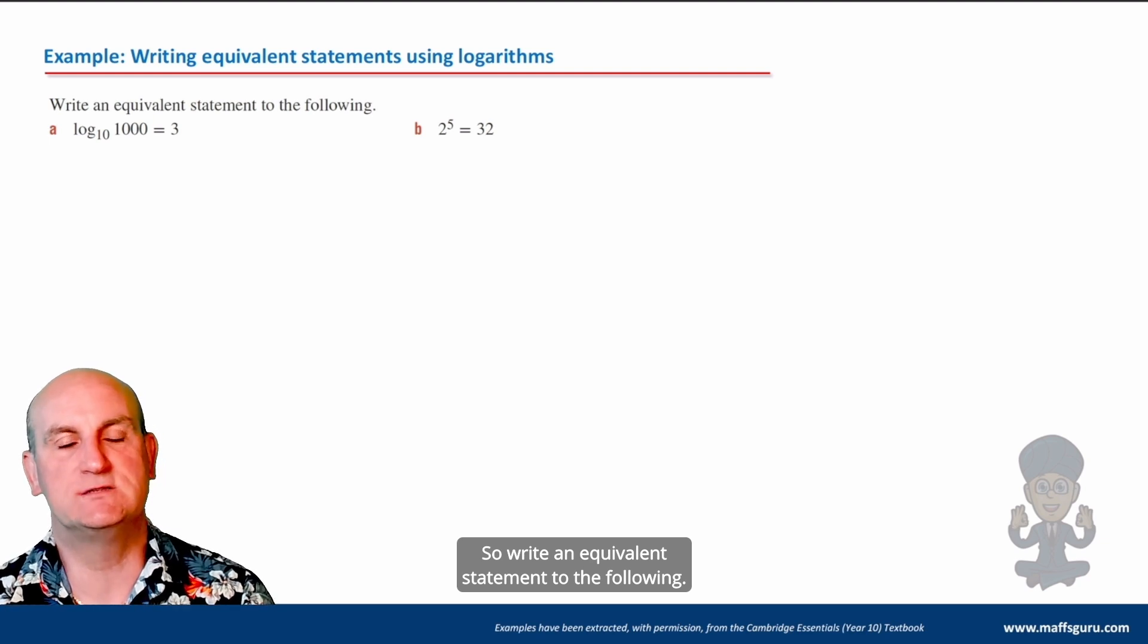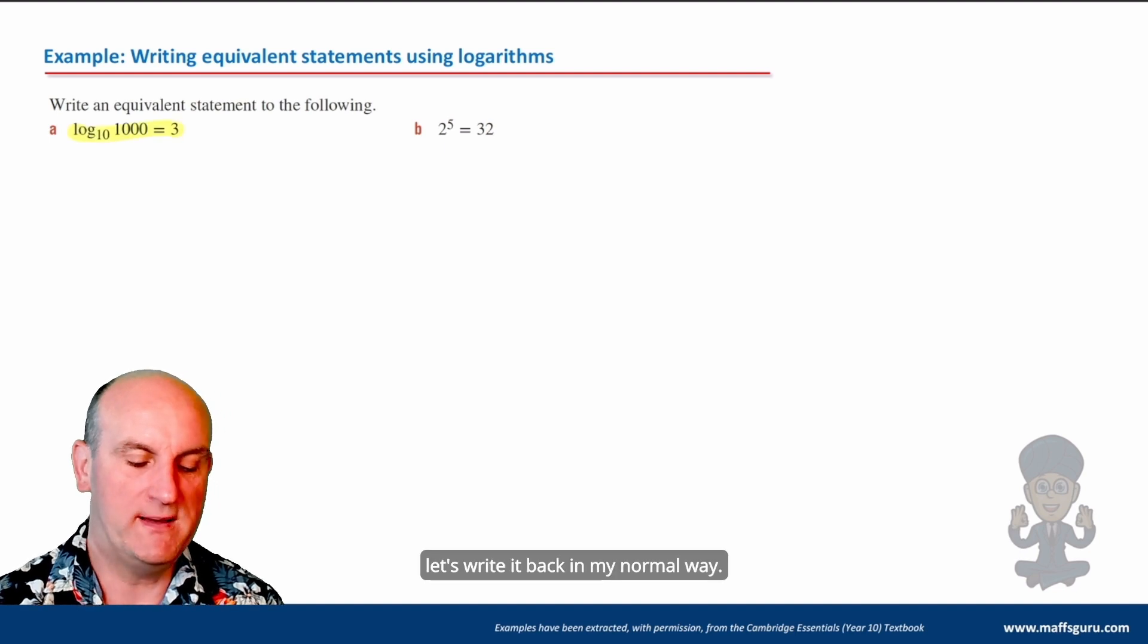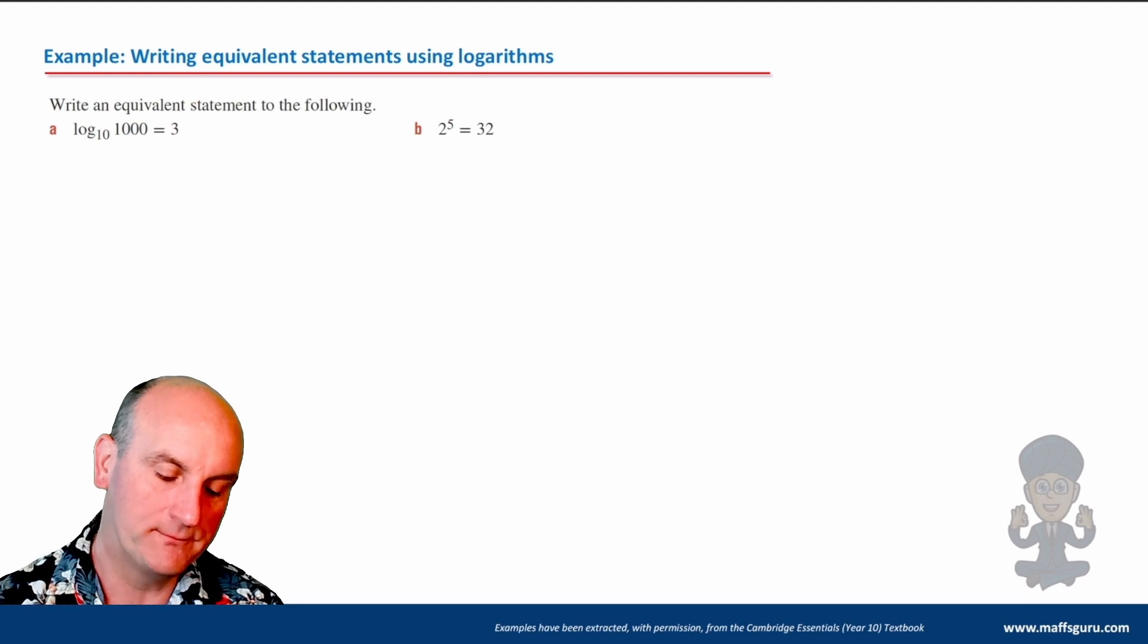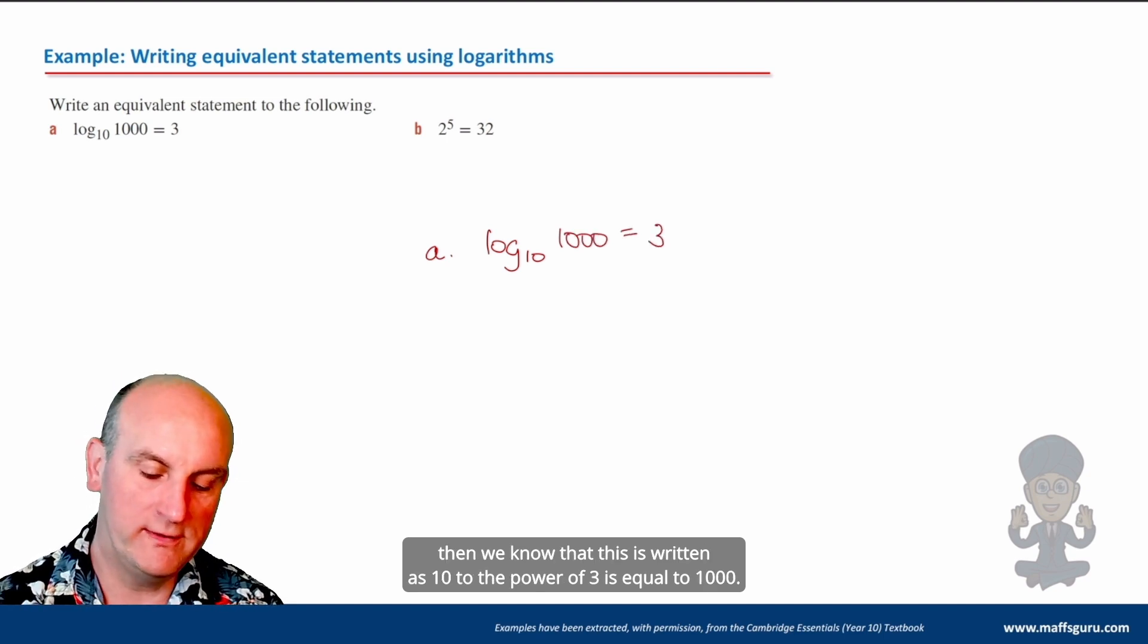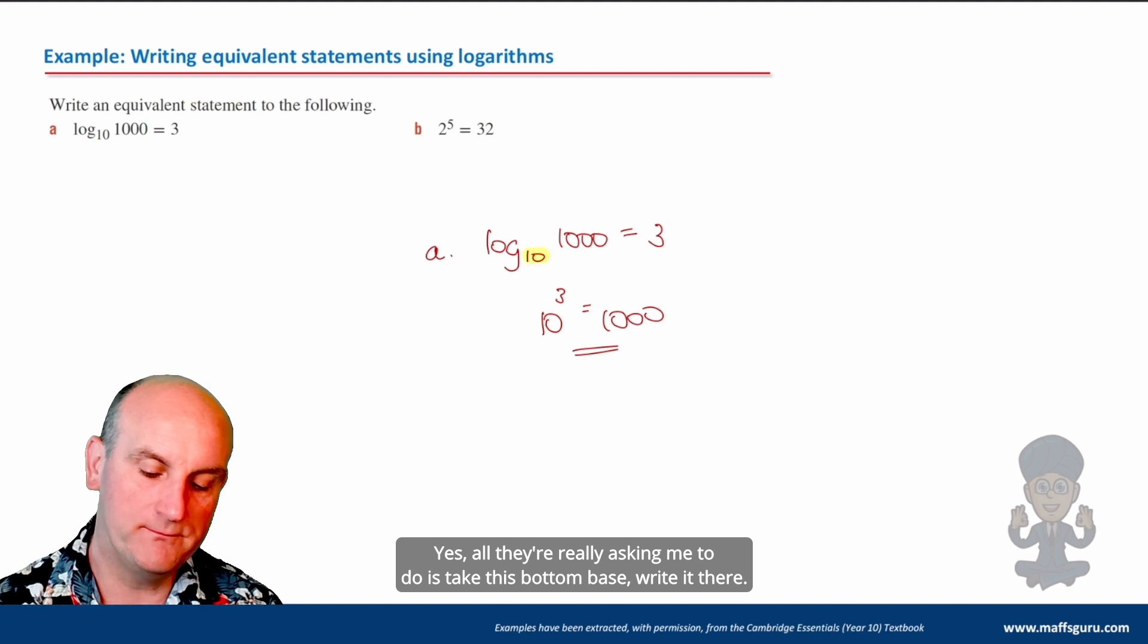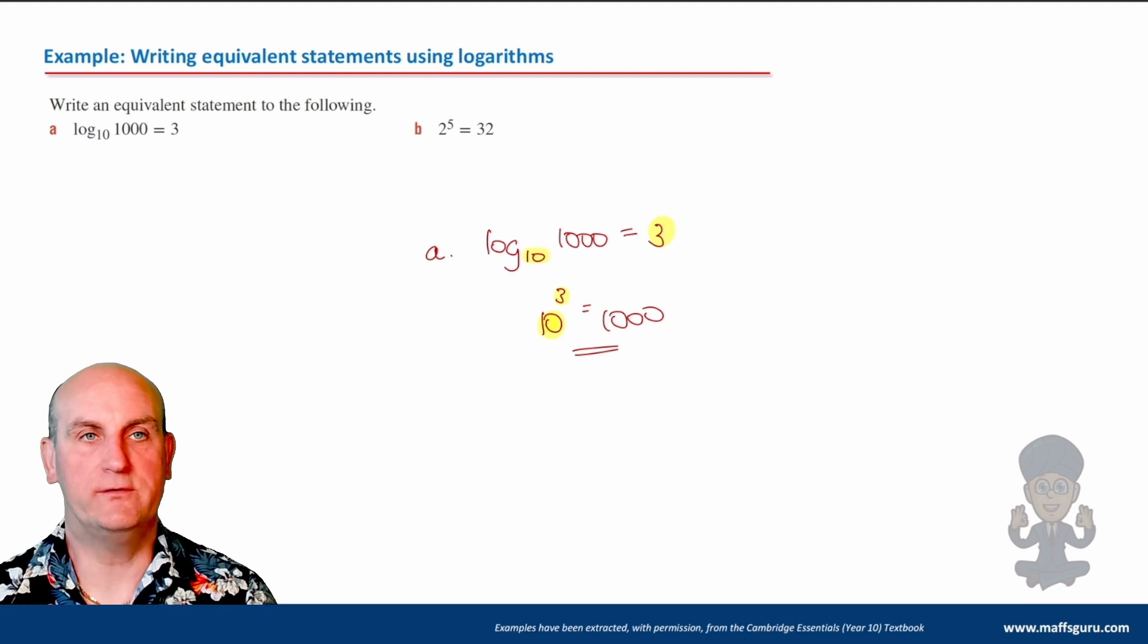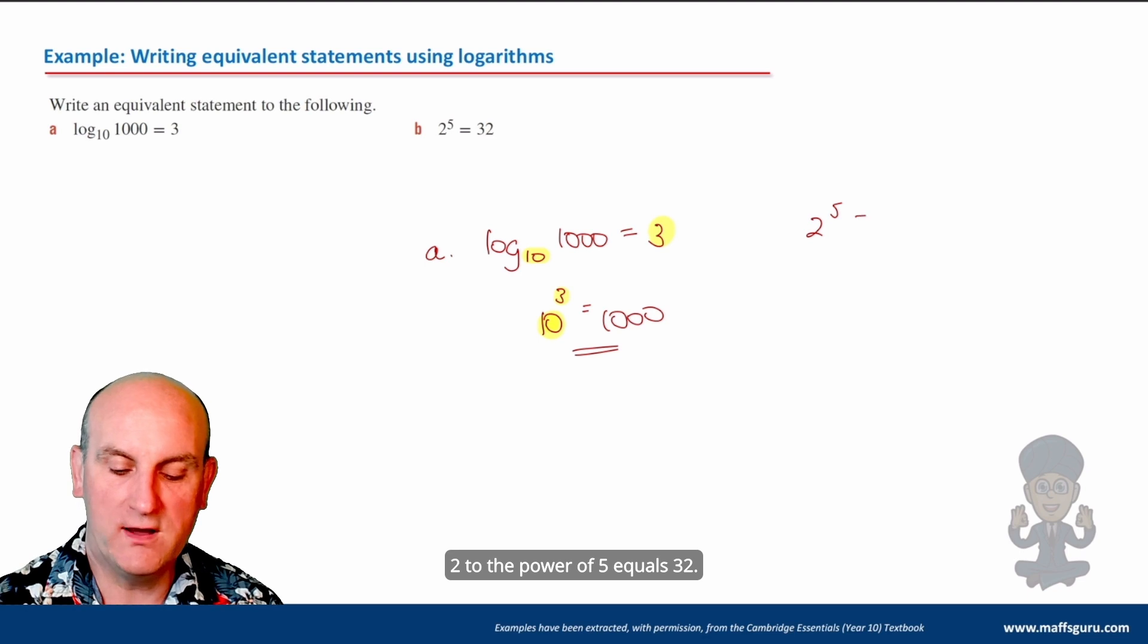Write an equivalent statement to the following. So basically that's just anyone saying, well, if I've got here a log statement, let's write it back in my normal way. So we now know then that for part A, if we've got log of 10 of 1,000 is equal to 3, then we know that this is written as 10 to the power of 3 is equal to 1,000.